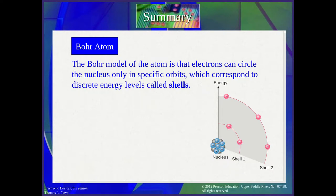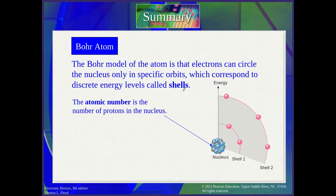First, the Bohr atom. Bohr is the name of the scientist. This is a model where we have seven layers around the nucleus of the atom. Every layer is named a shell, and this is the nucleus of the atom. Every shell has its level of energy — a discrete energy level. The atomic number is specified by the number of protons in the nucleus, and it equals the number of electrons in the orbits, which we name shells.